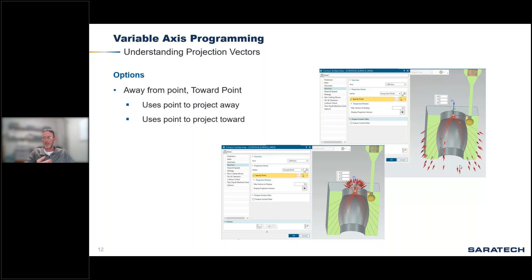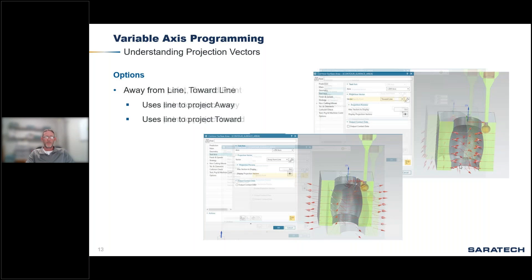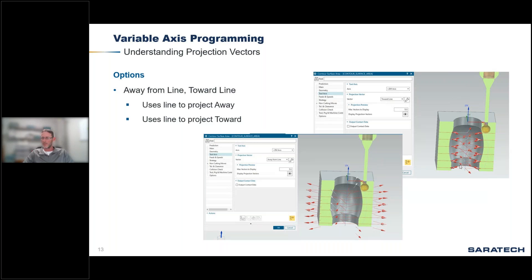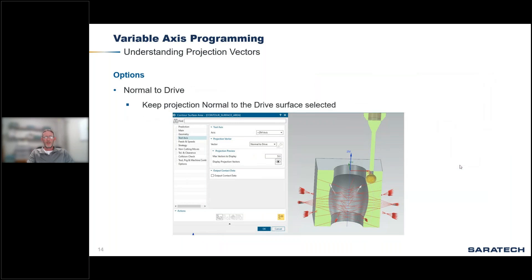The lower example — toward point — is going from the center to the outside, which results in no toolpath. Away from line and toward line: the upper example is going toward the line, also going from outside the part into the inside — NX wouldn't see any surface and wouldn't create toolpath. The lower example, away from line, starts at the line and goes out to the surface, so NX can see a great deal.